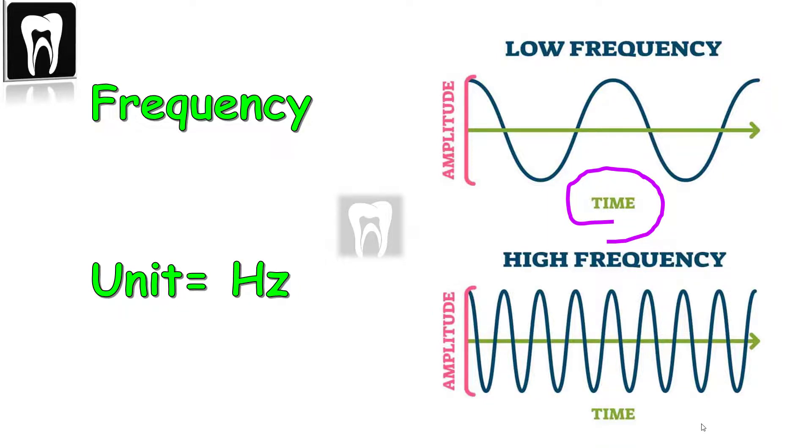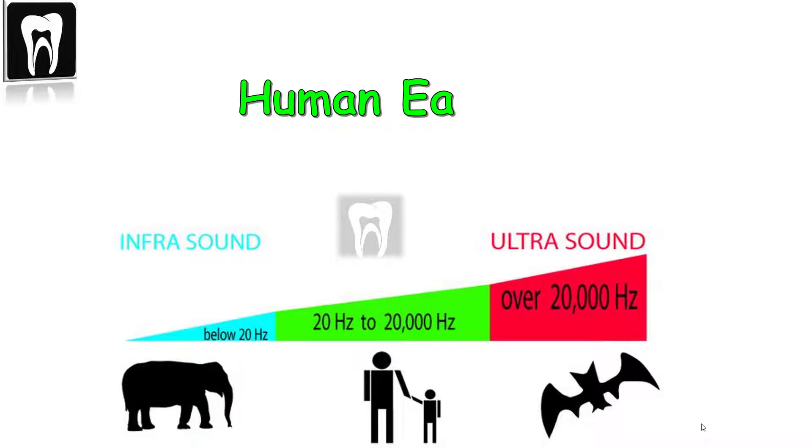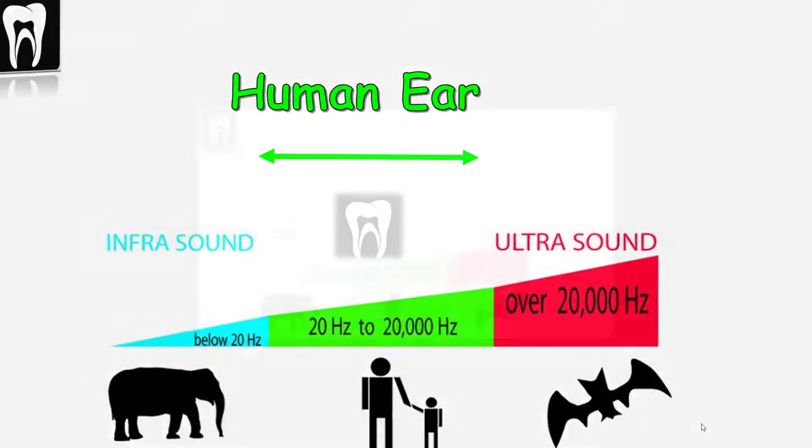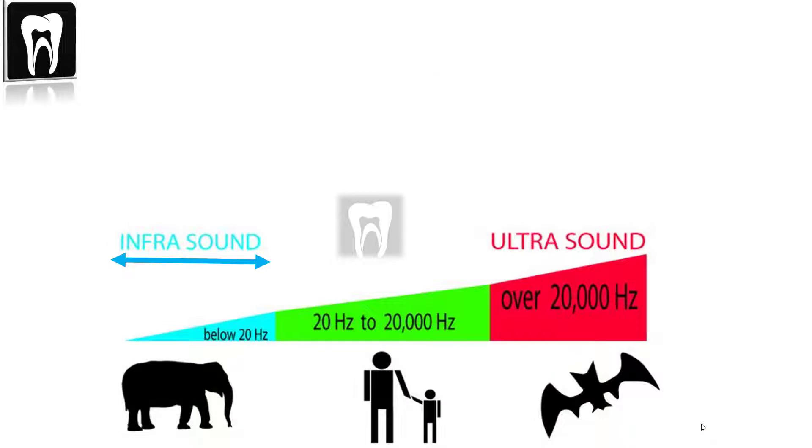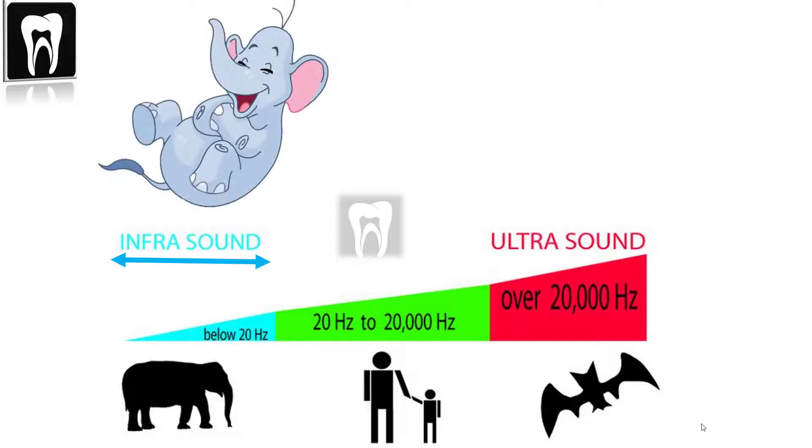The human ear can hear between the frequency of 20 Hertz to 20,000 Hertz, so sound is vibration in this frequency range. The human ear cannot hear below 20 Hertz and the frequency below is called infrasound. Elephants can use infrasound and use it to communicate jokes that they don't want humans to hear.